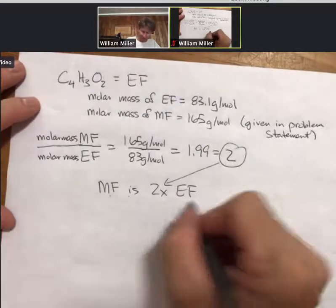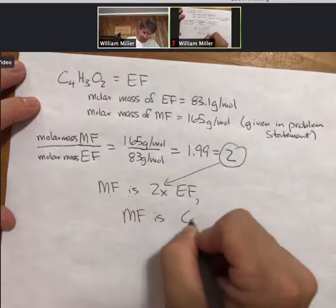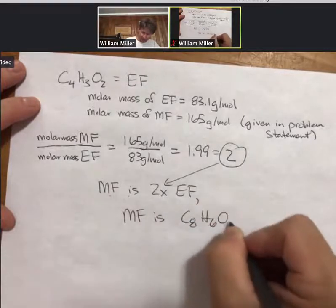So the molecular formula is 2 times the empirical formula, which means the molecular formula is C8H6O4.